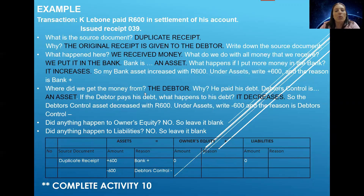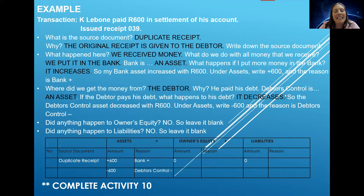Where did we get this money from? Who gave it to us? The debtor. Why did he give this money to us? Because he paid his debt. Now, remember when we talk about debtors and their debt, we know that we group all of the debt transactions in the debtor's control account. Debtor's control is also an asset. So if a debtor pays back his debt, what happens to his debt? It becomes smaller — he owes us less. So therefore, the debtor's debt decreases, and as a result, my debtor's control asset will also decrease with that 600 Rand.